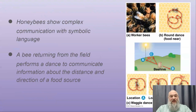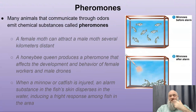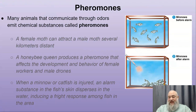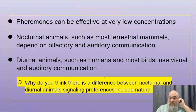Honeybees can communicate the location of flowers, how far away they are, and in what direction through dances. Pheromones are chemical substances that communicate over distances — essentially smell. A fish in distress releases pheromones that cause other fish to school together and drop low in the water so predators can't reach them from below. Pheromones can be effective at very low concentrations.